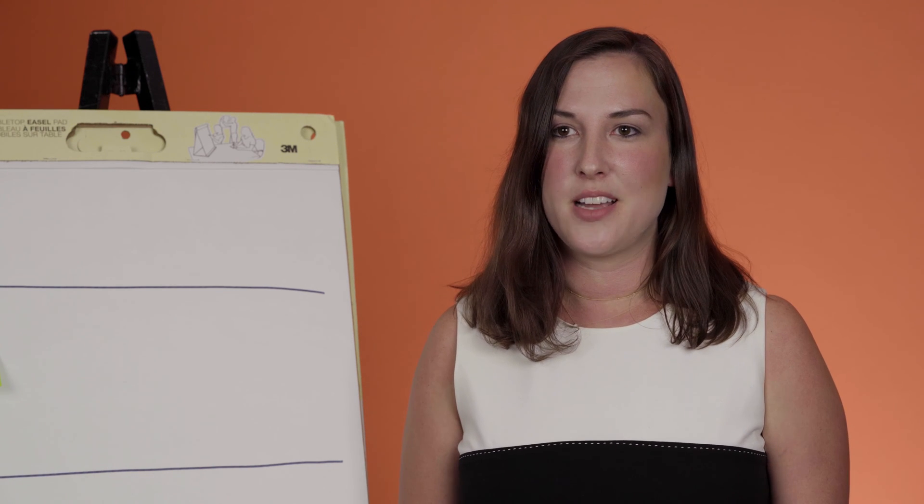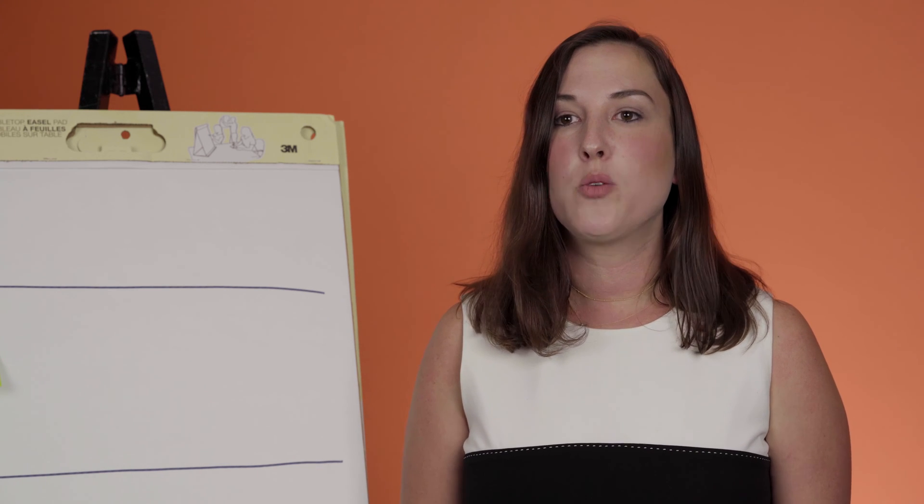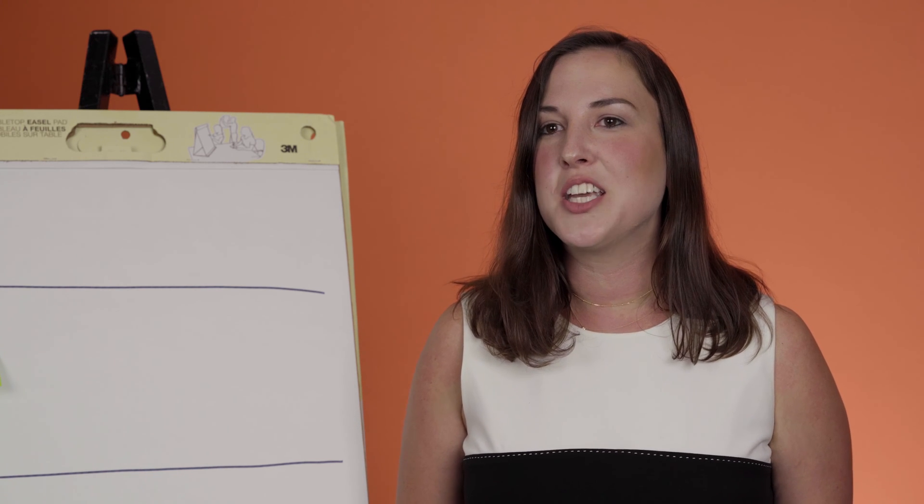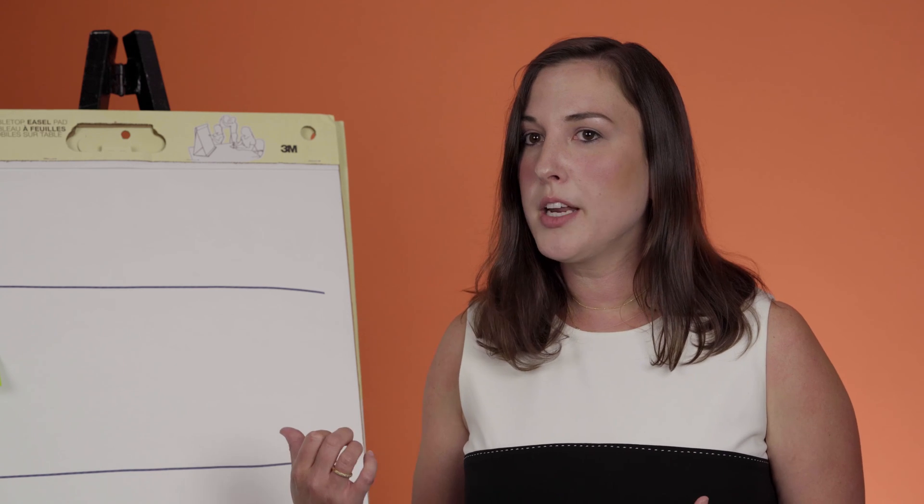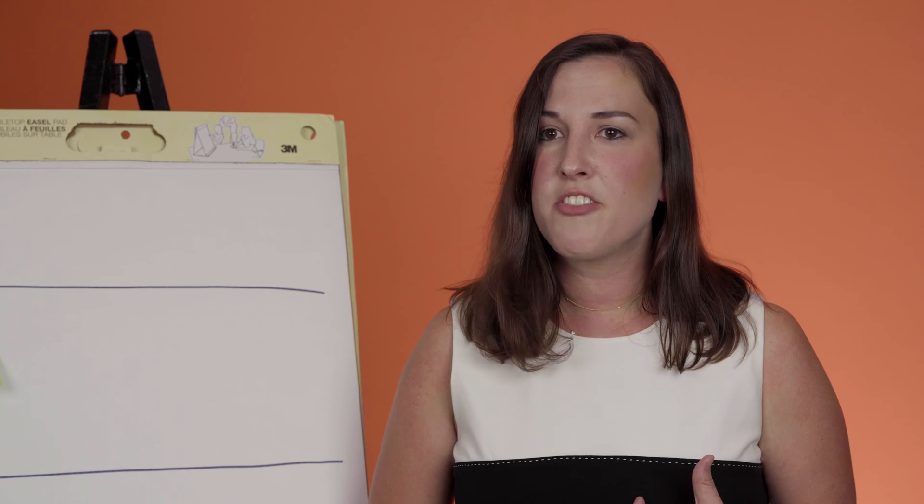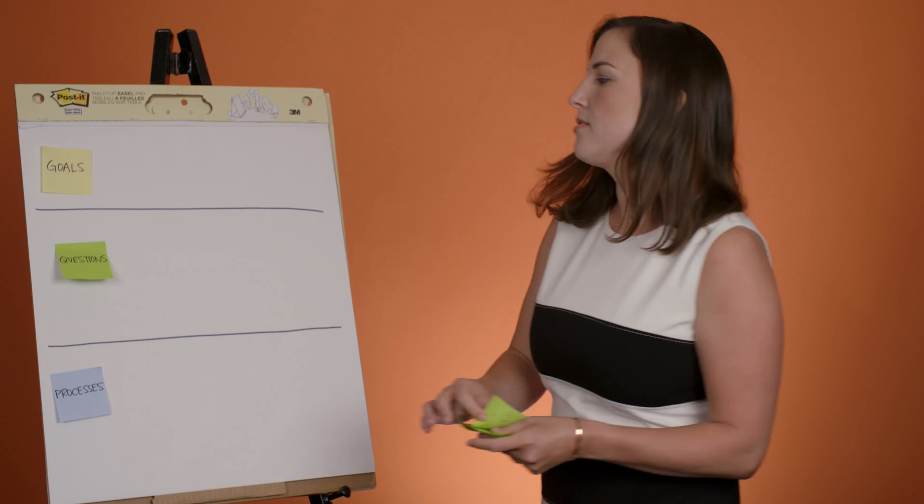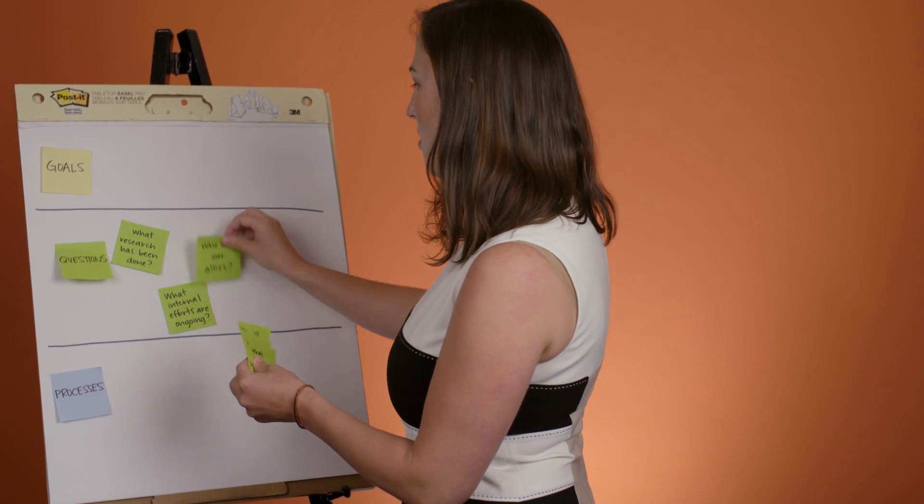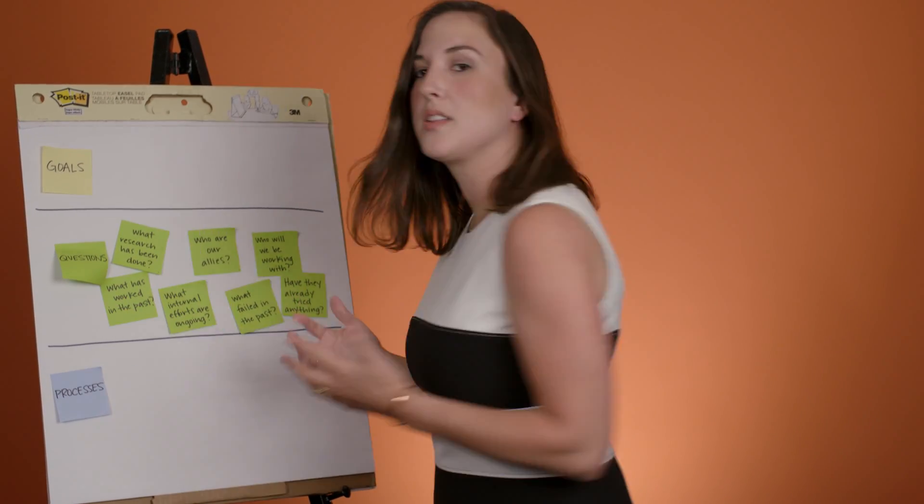Now, there are three steps to using the workshop design canvas. First, brainstorm the questions you have. Write one question per sticky note and post them up. It's easiest to start articulating what you don't know. If this were a discovery workshop I were planning, for example, I might have questions about existing user research, current and past efforts, and who my stakeholders will be for the project. So I would write each of those questions up and simply post them on the landscape map in any fashion and in any order that they appear.